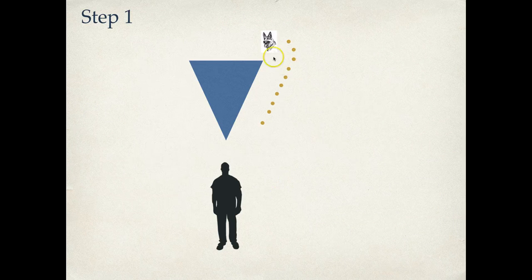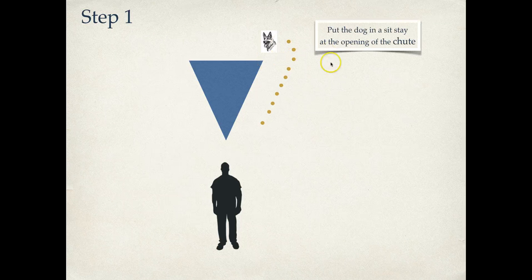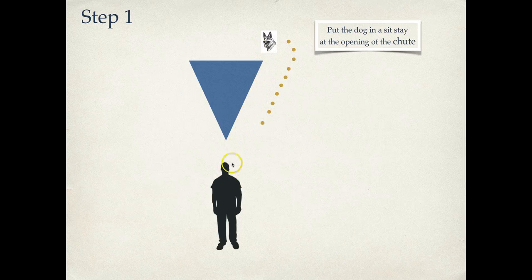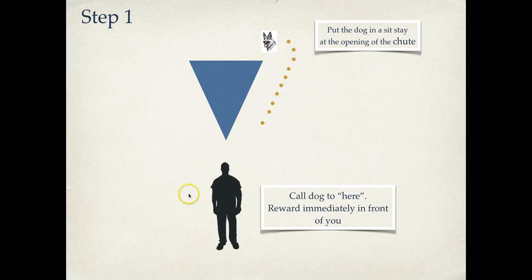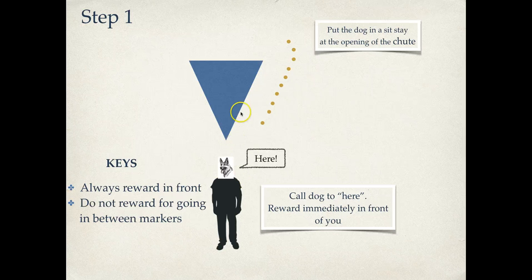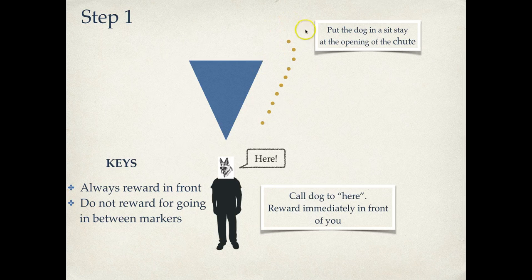Step one. Usually what I'll do is have the dog on leash, bring him out, and I'll actually go in the left side of the blind, kind of walk him around to this opening of the chute here. At the opening of the chute, I'll put the dog in his sit-stay. I'll leave the dog and walk in between the chute down to the end of the blind. From there, I'll call the dog to here and reward immediately in front of me. I'll reward in front, and that means on this side right here. Always reward in front. A lot of the times, the dogs won't want to get into this, so they'll try to go around or they'll try to go in between the markers. Don't reward for that. Just take them back to the beginning and encourage them to go in between the markers.